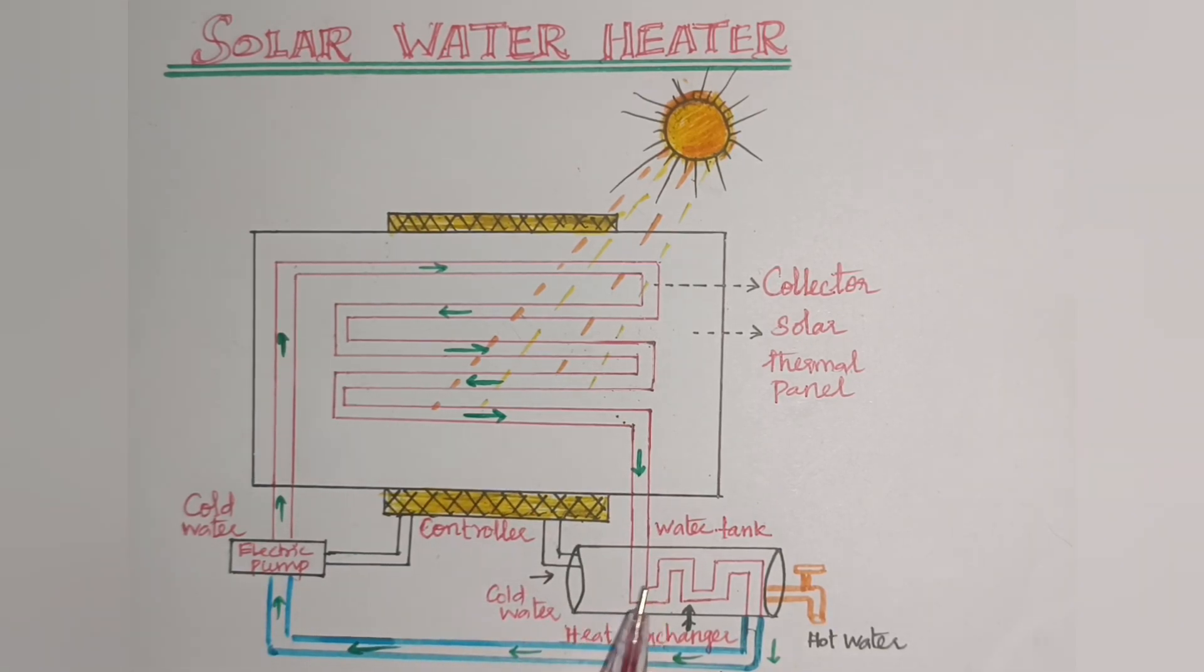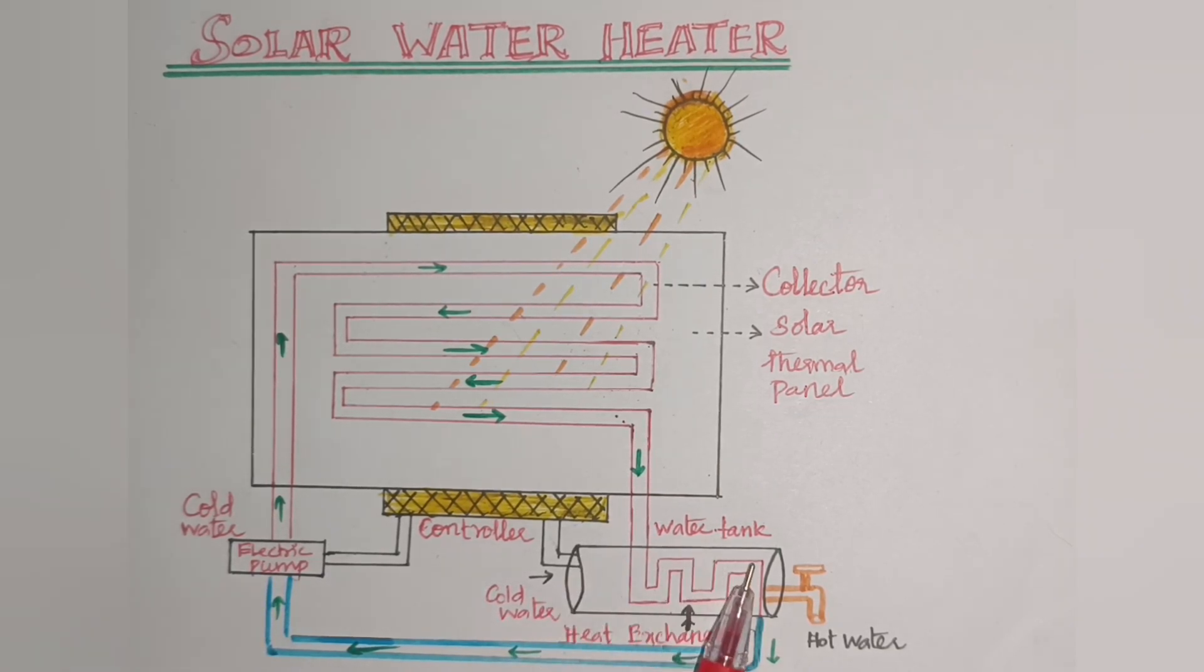This is the heat exchanger. This is the water tank. This is the cold water tank. This is the copper pipeline. We need to exchange cold water with hot water.